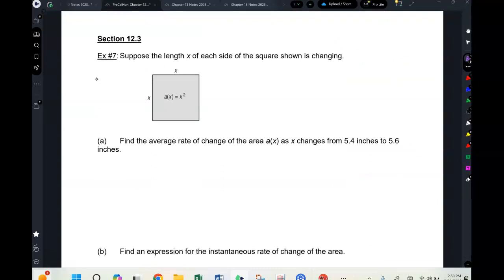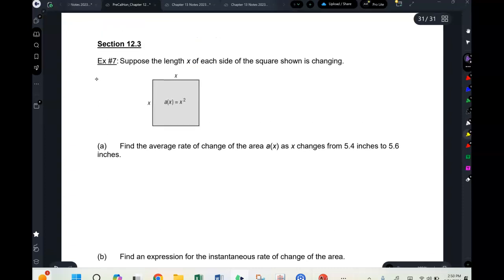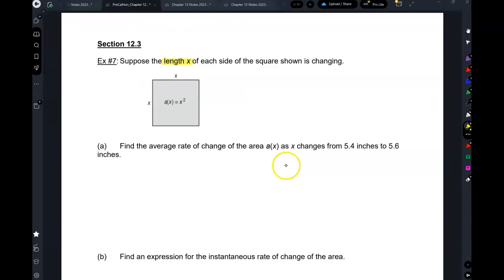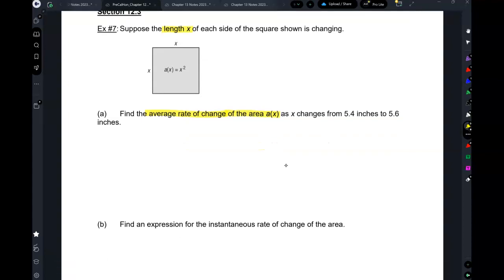Remember 12.3 we talked about rate of change. So suppose the length x of each side of a square is changing, like you know, expanding or contracting or whatever. You want to find the average rate of change of the area as x changes from 5.4 to 5.6 inches. Average rate of change of the area.